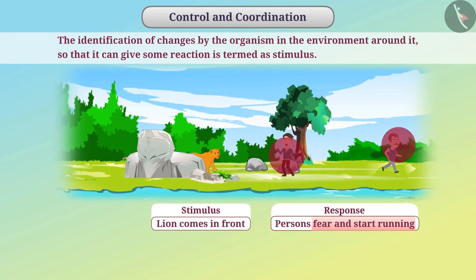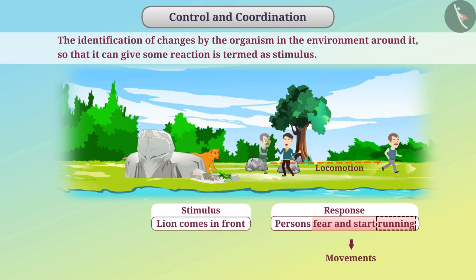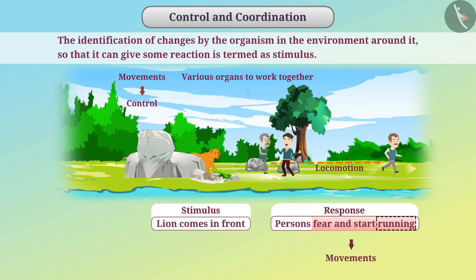In order to give the response, the organism performs various movements. Some movements cause a change in position of the organism. If an organism changes its position during a movement, then such movement is called locomotion. In order to give a response for a stimulus, there is a need for control over the movements, and it is also necessary for various organs to work together. We call it coordination.